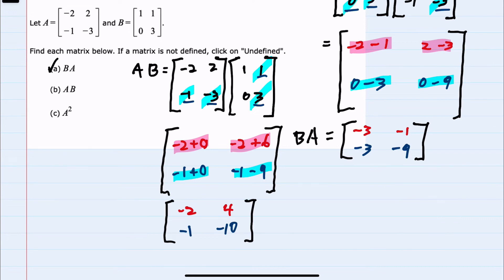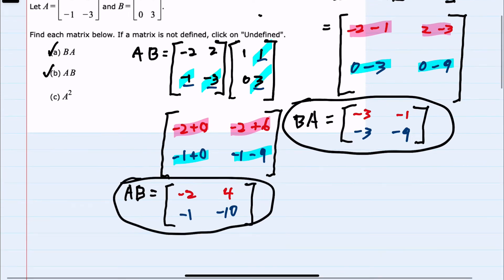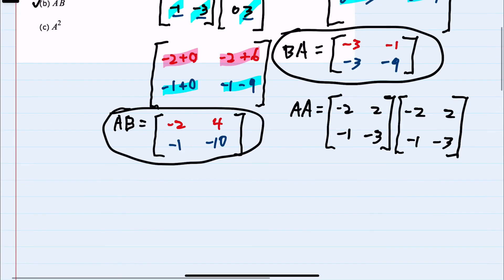We can see that we have a completely different matrix when we multiplied A times B than when we multiplied B times A earlier. So we have found B times A and A times B. Lastly, we want to find A squared — that is A times A — so both the first and the second matrix is the A matrix.